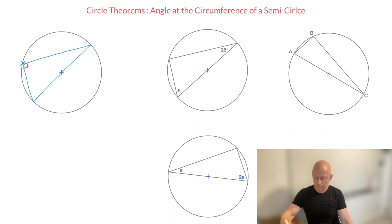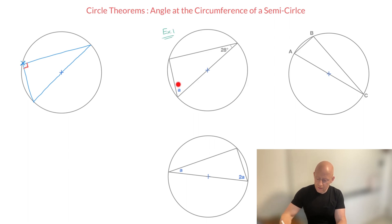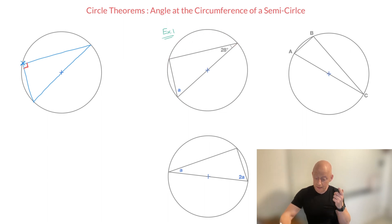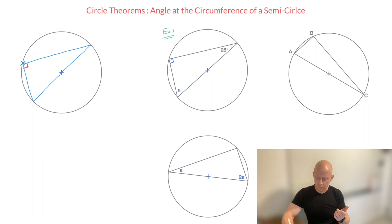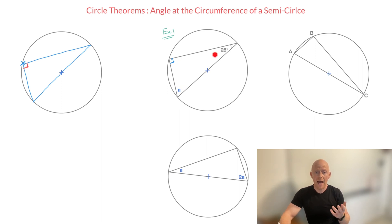Let's now work through the three examples. I'll start with example one. We need to find this unknown angle labeled A on this diagram. Looking at the information we're given, we can see that this line segment is a diameter. Since this is a diameter, the sector I'm hovering over right now is in fact a semicircle. And since this point is on that semicircle's circumference, we can use the rule we've just seen to state that this must be a right angle. Now to find A, all we have to do is use the fact that all three interior angles of a triangle must add up to 180.